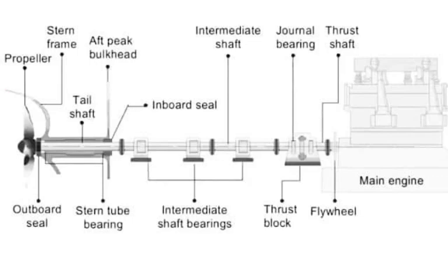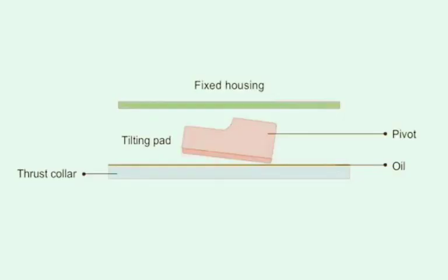Looking at the vibration curve in the diagram, the thrust block is located at the node or near the nodal point. Similarly, the vibration curve rises and the damper is fitted at the anti-node or near the anti-node point. If detuners and dampers are fitted at nodes, they will not function effectively since the amplitude of vibration is minimum or zero. They function effectively at anti-nodes, but as it is not practically possible to fit exactly at anti-nodes, they are often fitted at the forward end of the engine.